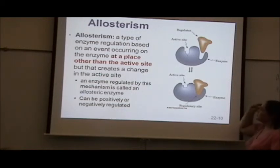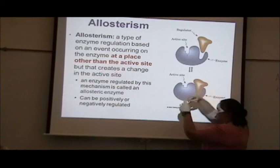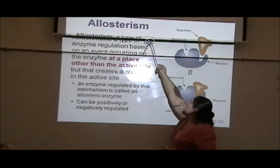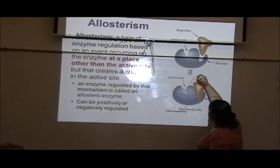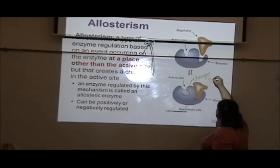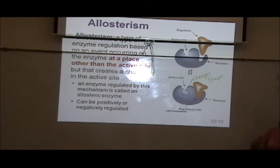So just like with the hemoglobin, something binds over here and what you should be looking at here is that when this binds, the active site changed shape. If you were looking at allosteric inhibition, the change in the active site shape would prevent the substrate from binding. If you were looking at allosteric activation, then the change in the shape would be the correct shape now and it would allow the substrate to bind.